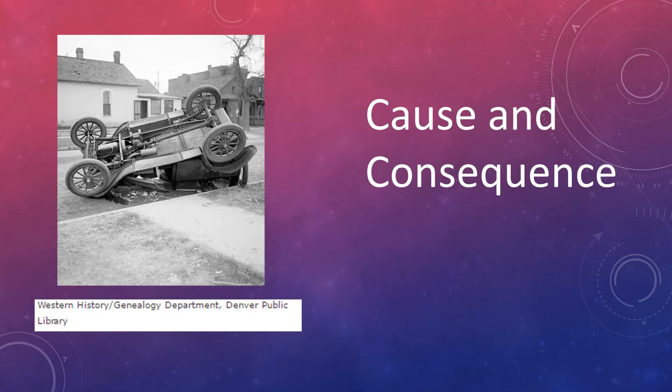Cause and consequence involves asking how actions and situations led to or caused events in history and our present situation. There can be underlying causes, immediate causes, immediate consequences, or long-term consequences. Some consequences are unexpected while others are expected, and some are more directly related to specific causes while others are indirectly related. Some of the causes interact with other causes and contexts and situations.